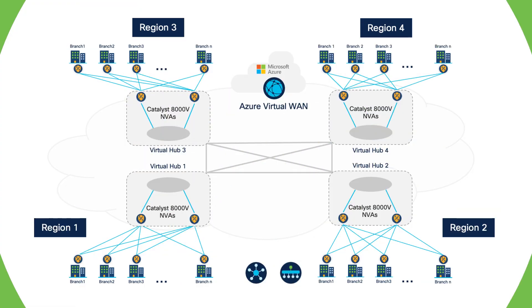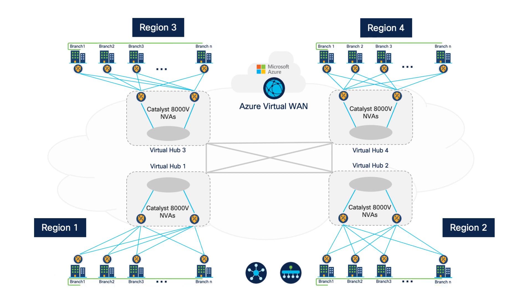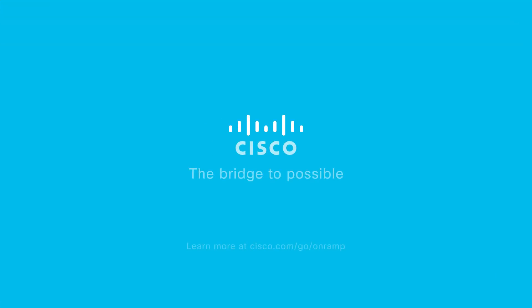To summarize, using a template and a few clicks, we created a virtual WAN, a virtual hub, and instantiated a pair of Catalyst 8000 virtual routers. We also logically grouped host vNets and allowed access from specific branches to these vNets. Learn more at cisco.com/go/onramp.